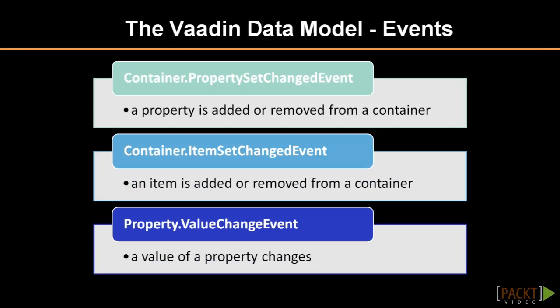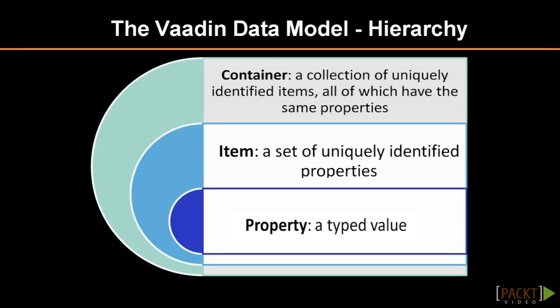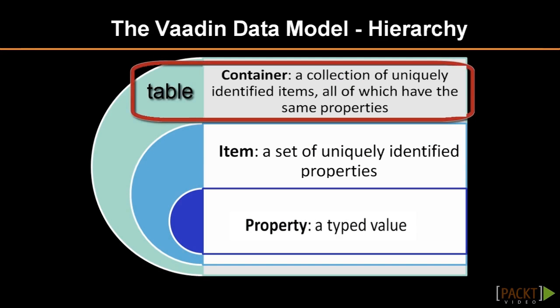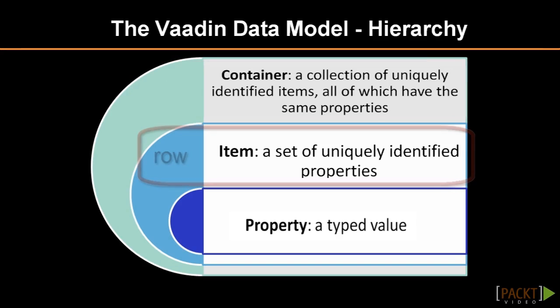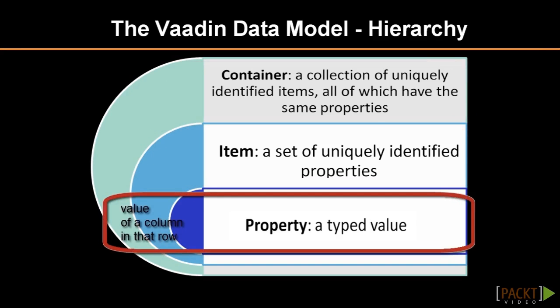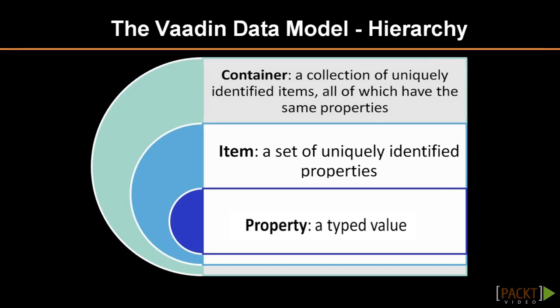Some container implementations also allow adding or removing properties. In such a case, a property set change event is broadcasted. The easiest way to understand the Vaadin Data Model is to apply it to relational databases. In the most general form, a container is a table, an item is a row, and a property is a column value of that row.